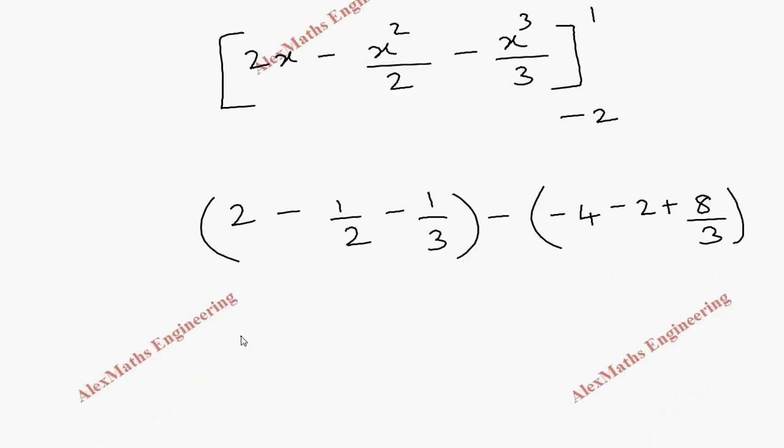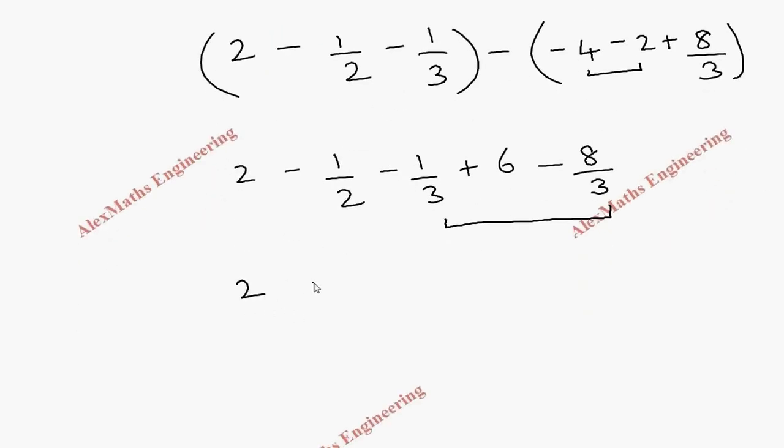Now, this part 2 - 1/2 - 1/3 as it is, and these two combine together as -6 plus 6 and this becomes -8/3. So combining these two, we get -9/3, which is -3. So 2 - 1/2 - 3 + 6. Combining these is 3, 3 + 2 is 5. So 5 - 1/2, after taking LCM, 10 - 1, which is 9/2. Since it is area, we write 9/2 square units.